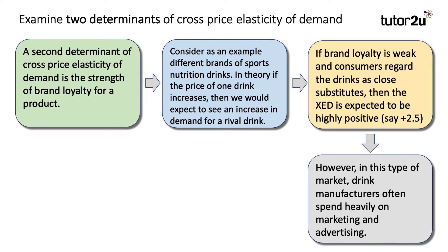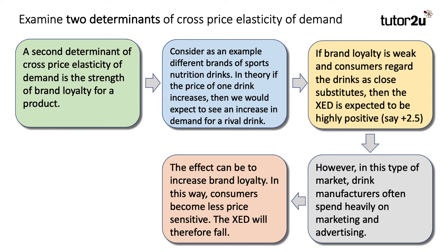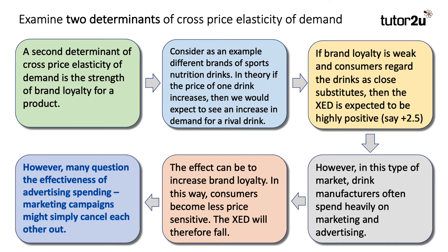However — evaluation coming up. In this type of market, drink manufacturers often spend heavily on marketing and advertising, and the effect can be to increase brand loyalty. In this way, if brand loyalty is strong, consumers become less price sensitive because they're particularly attached to their favourite type of drink. In this situation, the cross price elasticity of demand will therefore fall — it'll still be positive, but the coefficient won't be as high. However, in evaluation, many people do question the effectiveness of advertising spending. If two firms are both spending heavily on marketing, advertising, and other types of promotion, then the effects might simply cancel each other out.